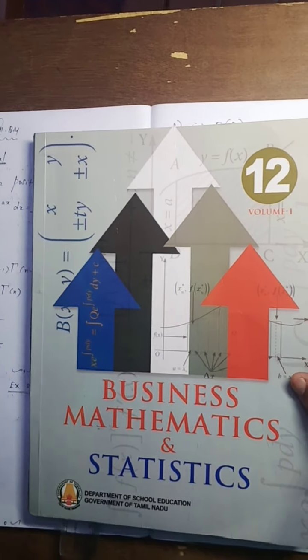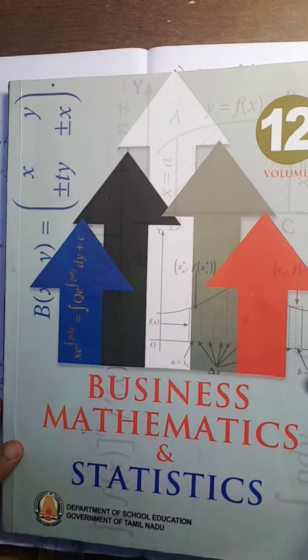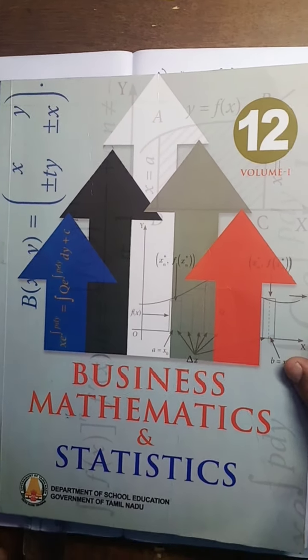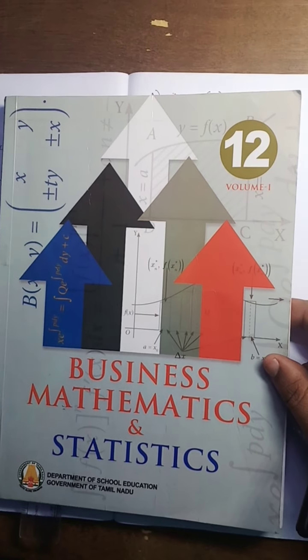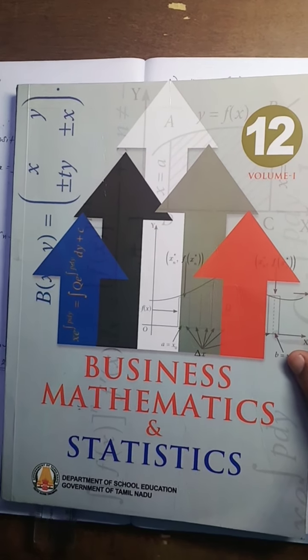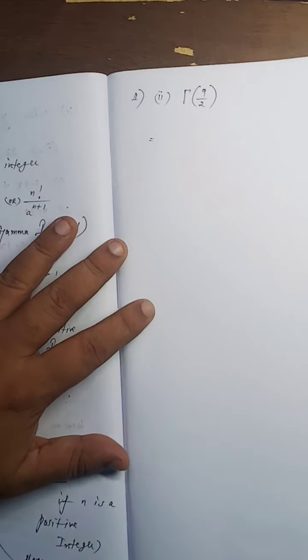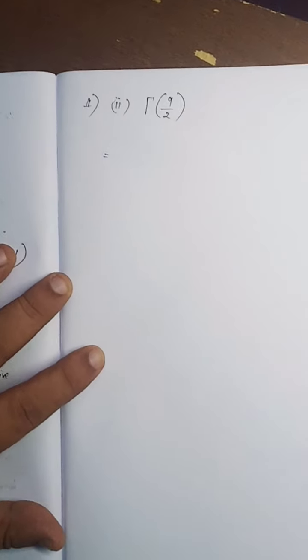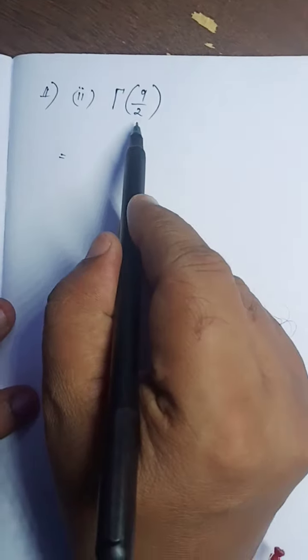This is Sivakumar, 12th Standard Business Mathematics and Statistics, Chapter 2, Continuation of Exercise 2.10 Problem 1, Subdivision 2. Evaluate Gamma of 9 by 2.